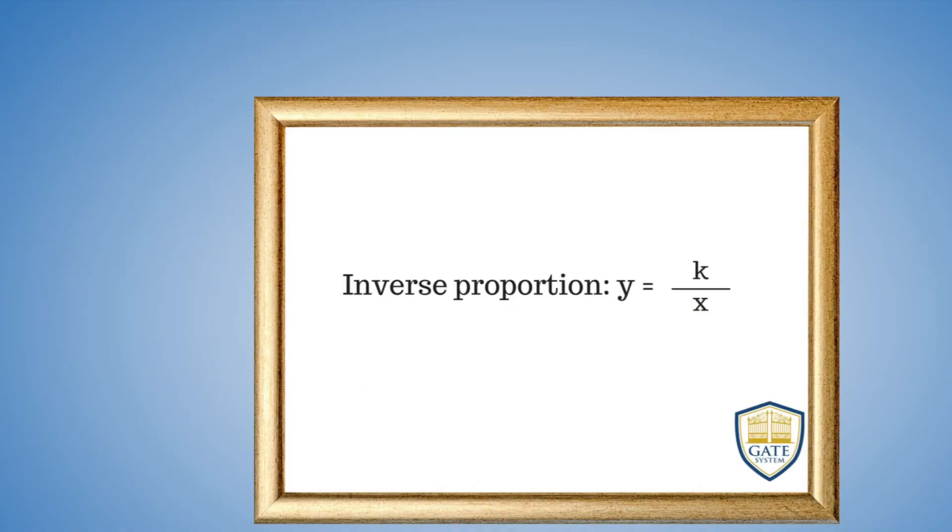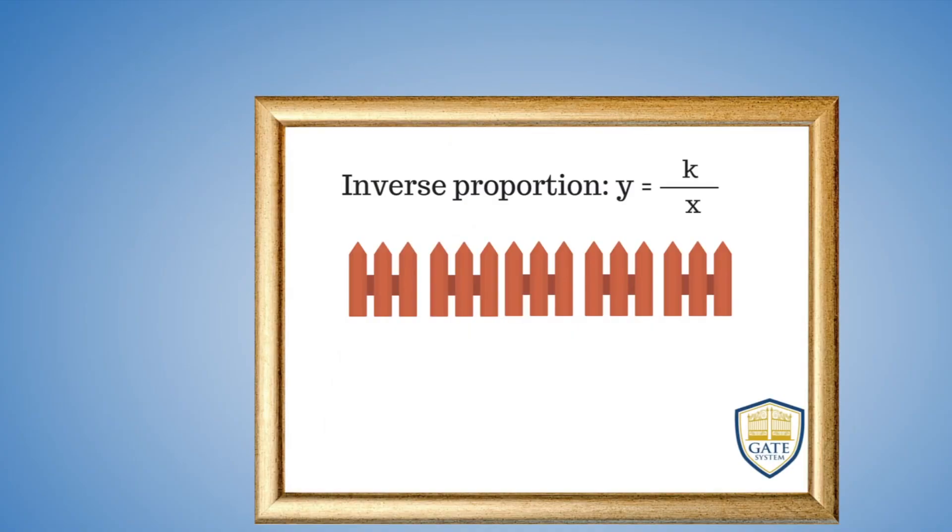Data can also be inversely proportional. I want to figure out how long it'll take 8 people to paint my fence. All I know is that it takes 3 people 4 hours to paint it. This is an inverse relationship — as the number of people goes up, time required to paint the fence goes down. If the number of people goes down, time required goes up. With direct proportion, both variables go up or down together. With inverse proportion, variables travel in opposite directions.